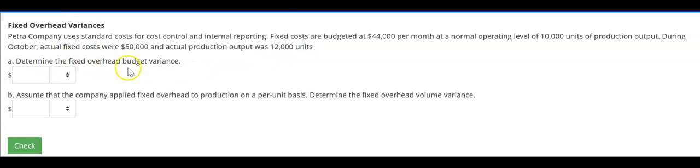Determine the fixed overhead budget variance. And then let's also consider B, it says, assume that the company applied fixed overhead to production on a per unit basis. Determine the fixed overhead volume variance.